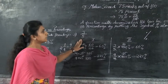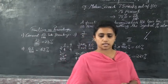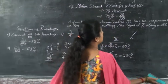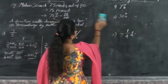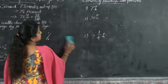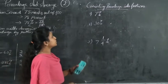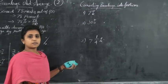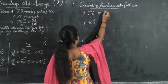Next is converting percentage into fractions. The first example is 7 percent. 7% means what? It is simply 7 by 100.